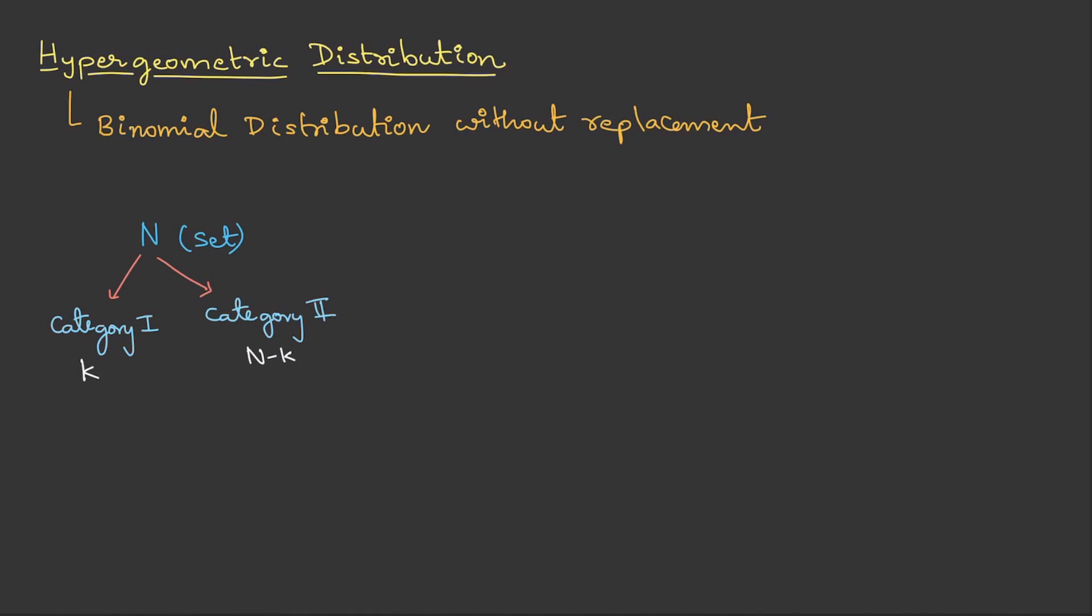Now, from this set, generally a person selects few items. Let the item selected be n, so we can take this as chosen items. When we choose certain items, again this will be of two categories, category 1 and category 2. Let us assume that category 1 is x items and category 2 will be n minus x.